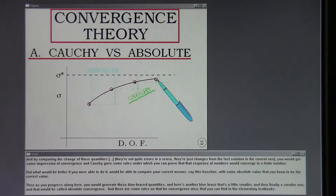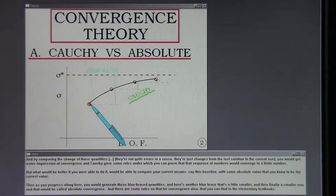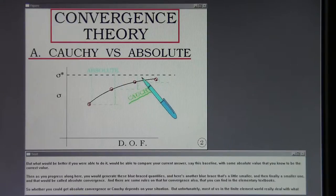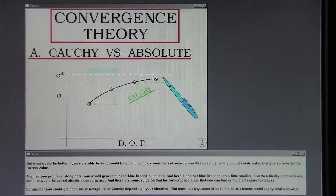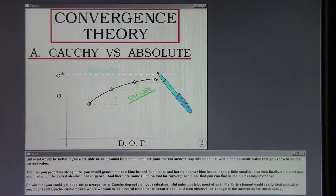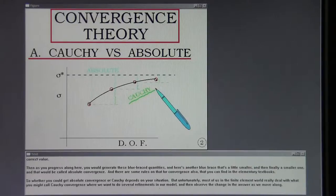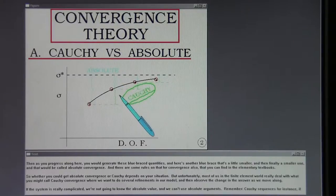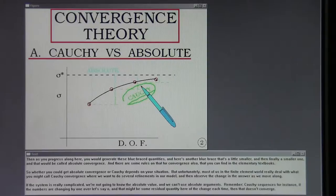But what would be better: if you were able to compare your current answer, say this baseline, with some absolute value that you know to be the correct value. Then as you progress along here, you would generate these blue braced quantities, and here's another blue brace that's a little smaller, and then finally a smaller one. That would be called absolute convergence, and there's some rules on that for convergence also that you can find in the elementary textbooks. So whether you could get absolute convergence or Cauchy depends on your situation. But unfortunately, most of us in the finite element world really deal with what you might call Cauchy convergence, where we want to do several refinements in our model and then observe the change in the answer as we move along. If the system is really complicated, we're not going to know the absolute value, and we can't use absolute arguments.